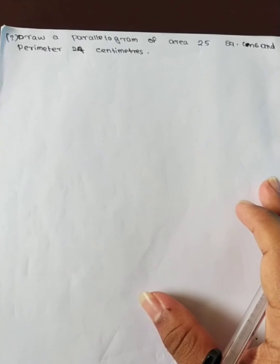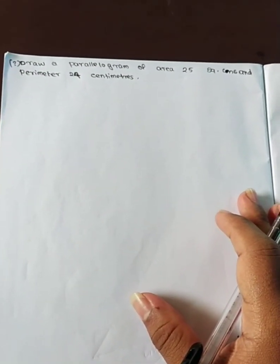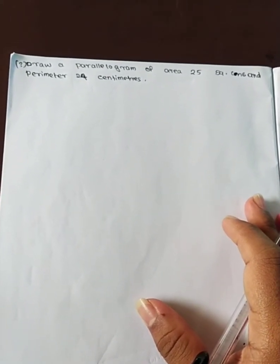If you have any questions: draw a parallelogram of area 25 square cm and perimeter 24 cm.